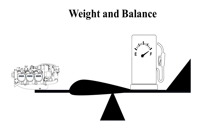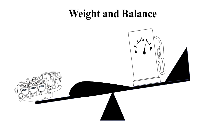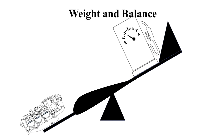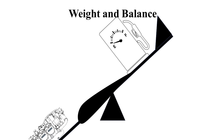Weight changes during a flight also have a direct effect on aircraft performance. Fuel burn is the most common weight change that takes place during a flight. As fuel is used, the aircraft becomes lighter and performance is improved, but this could have a negative effect on balance.